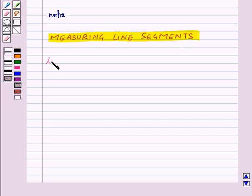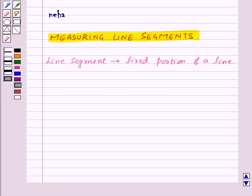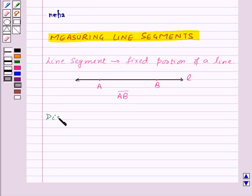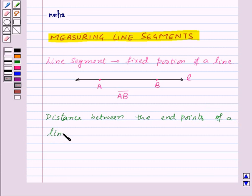So let us see what is a line segment. A line segment is a fixed portion of a line. For example, this is a line, say line L, and if you mark two points say A and B, then the fixed portion AB is the line segment AB. The distance between the end points A and B of a line segment is its length.